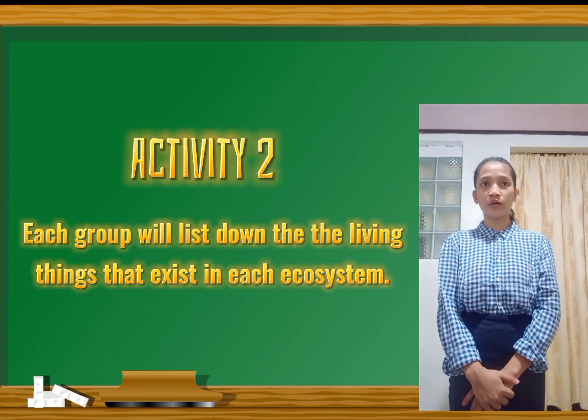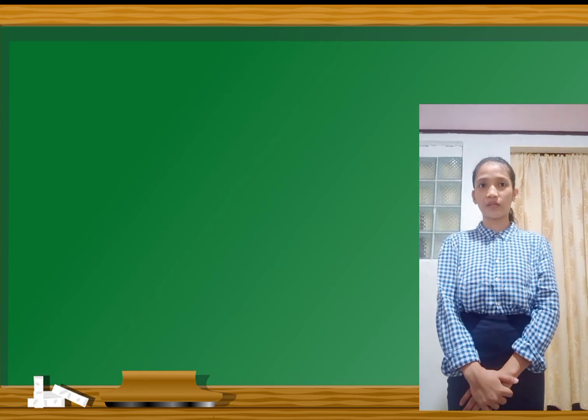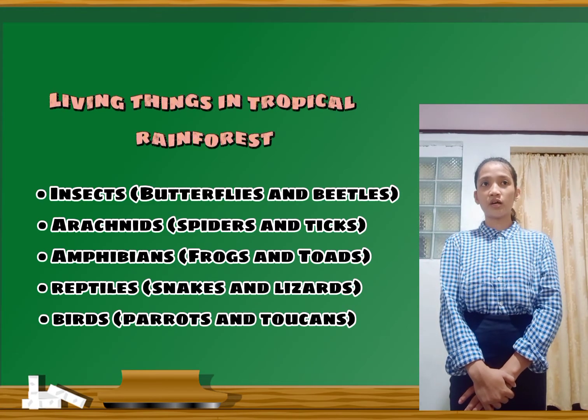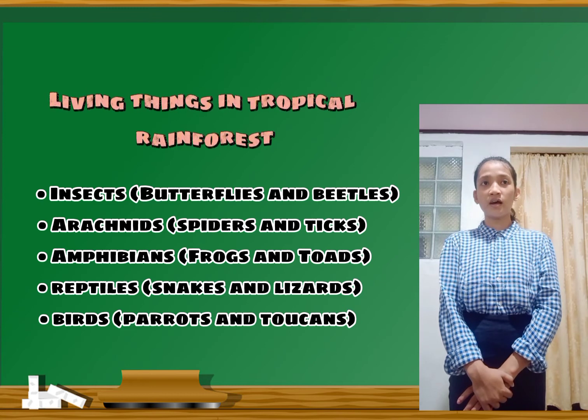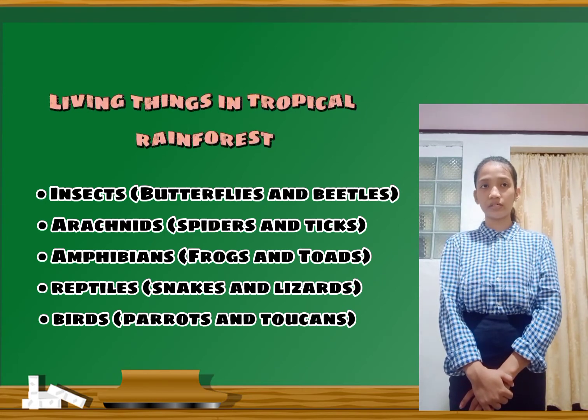For your next activity, the same two groups will each list down the living things that exist in each ecosystem. Well done, students — all your answers are correct. Now you have an idea about coral reefs and tropical rainforests. The answers from Group 1, which is coral reefs, are: crab, turtle, fish, clams, and lobsters. While the second group, which is tropical rainforests, listed: insects such as butterflies and beetles, arachnids like spiders and ticks, amphibians like frogs and toads, reptiles like snakes and lizards, and birds like parrots and toucans.